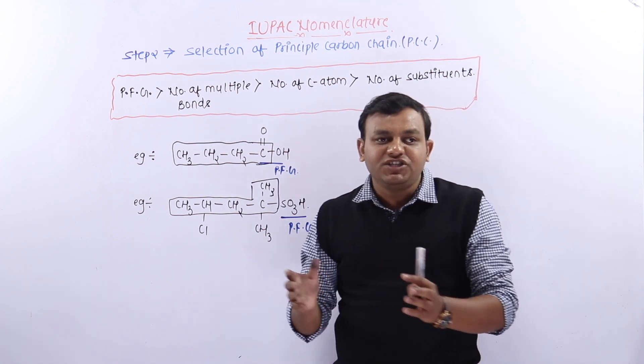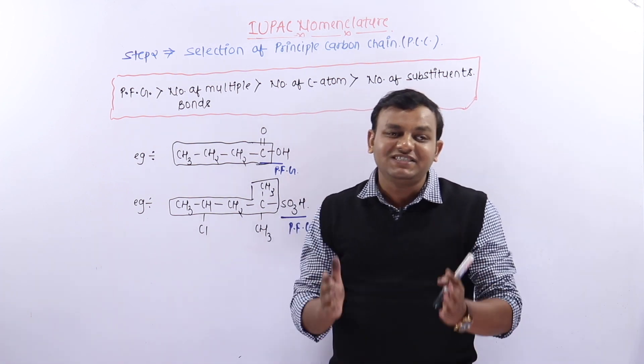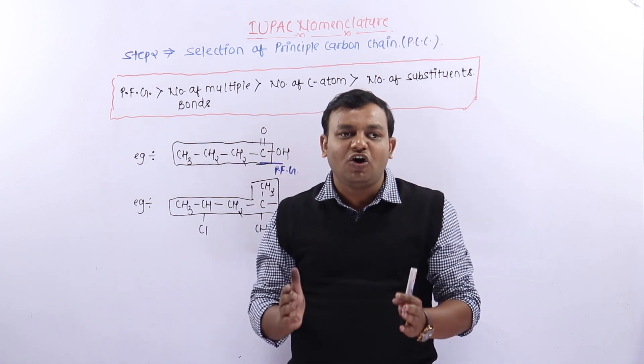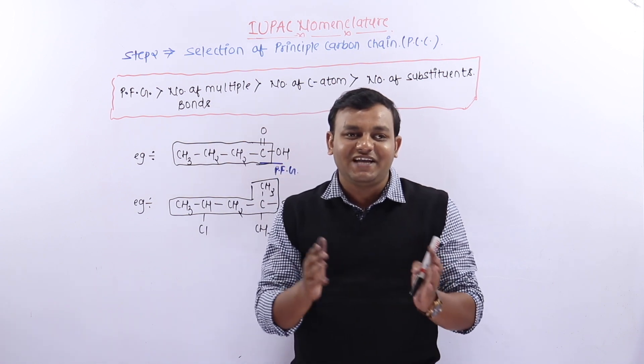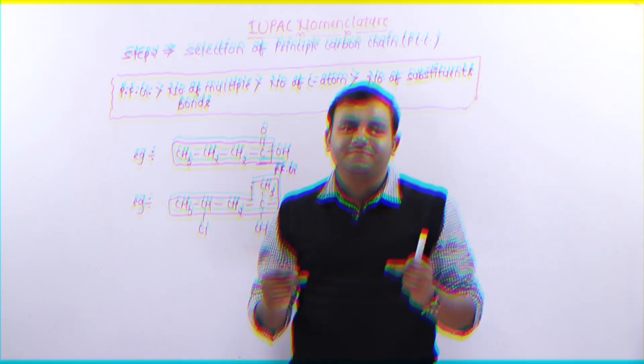तो second step में हमने सीखा principal carbon chain का selection। जल्दी से इस step का screenshot ले लीजिए, फिर हम Step 3 पर move करते हैं।